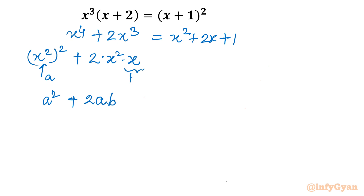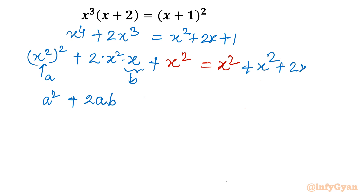So b is our x. The second term is 2ab and the first term is a². So b² is required — I will add b², that means I have to add x² to the left. So I need to add to the right-hand side also. The remaining terms become x² plus x² plus 2x plus 1. And this is your b². Now you know this formula is (a + b) whole square.